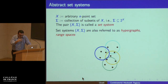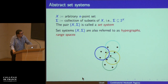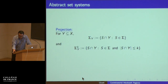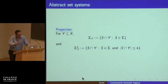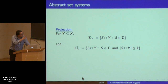We work with discrete abstract set systems where you have a ground set X, a collection of subsets of X called sigma, and the pair (X, sigma) is called a set system — sometimes also called a hypergraph or range space. One example: X is the set of black points, and the subsets are the points contained inside colored circles. Given an abstract set system, you can define what is called a projection: take a subset Y of X and calculate all unique intersections obtained by intersecting elements of sigma with Y — denoted sigma(Y). This is called the projection of Y onto sigma.